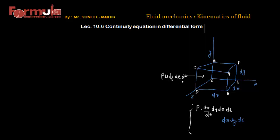The mass leaving face EFGH in time interval DT can be defined as [ρU + (∂(ρU)/∂x)·DX]·DY·DZ·DT, since both density and velocity are going to change over the distance DX. This is the amount of mass leaving through face EFGH in the X direction in the time interval DT.